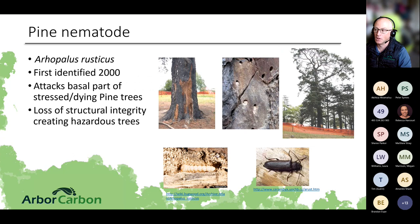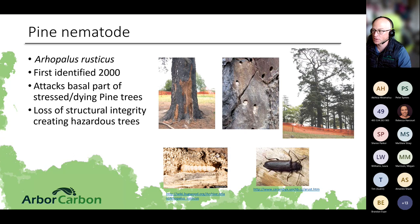The beetle found was Aropyrus rusticus, similar to the burned pine longicorn beetle in New Zealand. In tests involving over two to three thousand insects, only a handful actually carried the nematode — correlating with the small number of infected trees found across Melbourne. The biggest problem with this insect is that it causes structural deformity, making trees very soft so they fall over within a 12-month period.